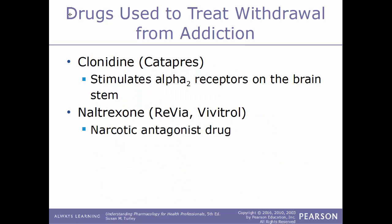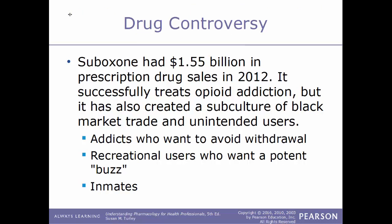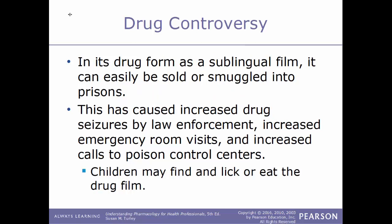Naltrexone (Vivitrol/Revia), a narcotic antagonist drug, can also be used to treat withdrawal. Combination drugs for withdrawal contain a narcotic agonist-antagonist such as buprenorphine and a narcotic antagonist such as naloxone — for example, Suboxone. Suboxone had $1.55 billion in prescription drug sales in 2012. While it successfully treats opioid addiction, it has also created a subculture of black market trade: taken by addicts to avoid withdrawal, by recreational users seeking a potent buzz, and smuggled into prisons as a sublingual film. This has caused increased drug seizures, emergency room visits, and calls to poison control centers.